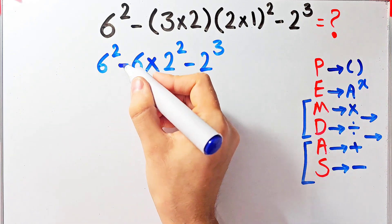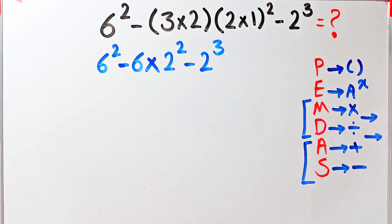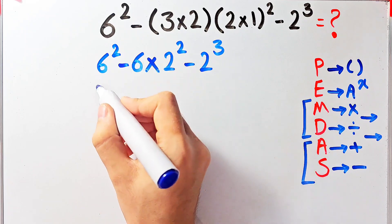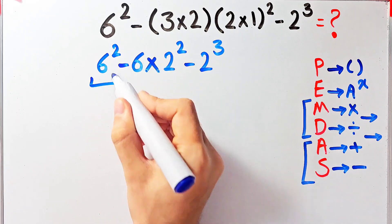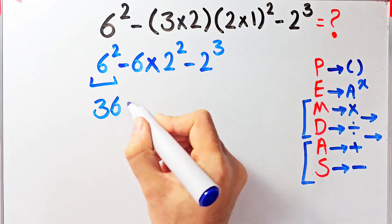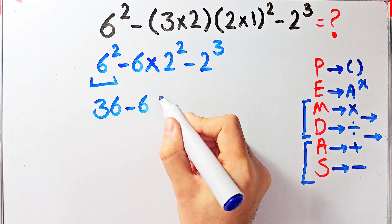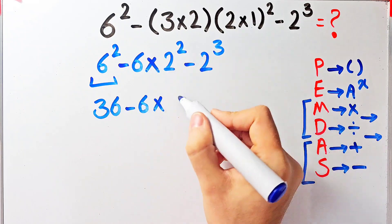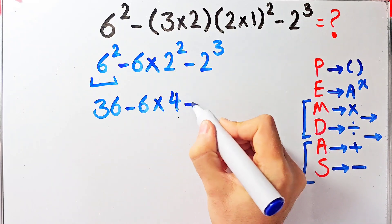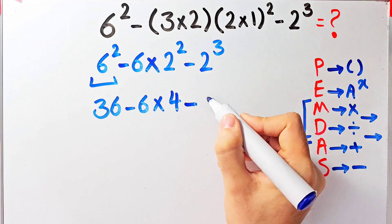In this step we have exponent, subtraction, and multiplication. First we simplify the exponents: six to the power of two equals 36. So we have 36 minus six times two to the power of two, which equals four, then minus two to the power of three which equals eight.